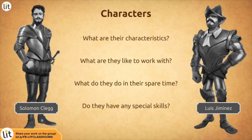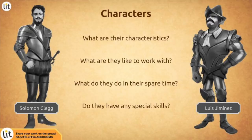Okay, so let's look back at chapter one together. Let's look at the characters of Solomon Clegg and Louis Jimenez. What are their characteristics and what are they like to work with? What do they do in their spare time and do they have any special skills? Are there any clues in chapter one that we read together? Let's read through that again now and I want you to think about how these different skills and characteristics have been written into each sentence — how they speak, what they have in their coats, how they hold themselves, even the thoughts inside their heads. So here's me, in the past, reading the second part of chapter one.